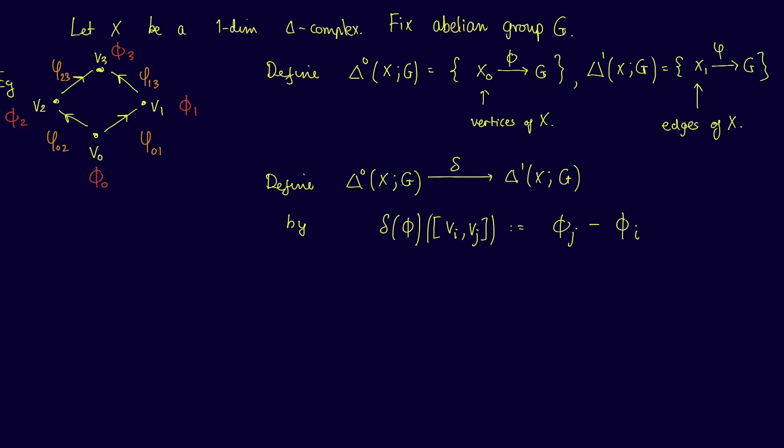For example, suppose that our group G is equal to the integers, and suppose that we see X as consisting of points in R², and that φ assigns an integer to each vertex equal to its height above the bottom vertex. Then δφ would simply return the difference in height from the top vertex to the bottom vertex of any edge.